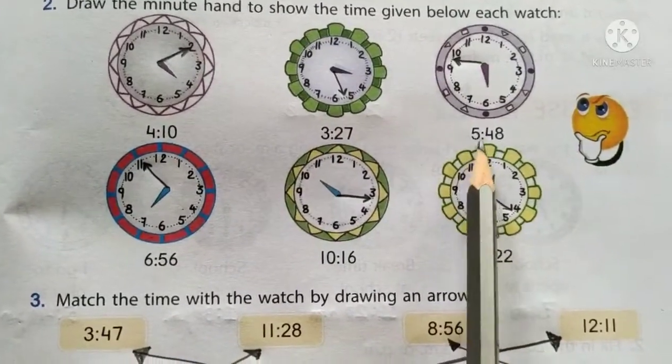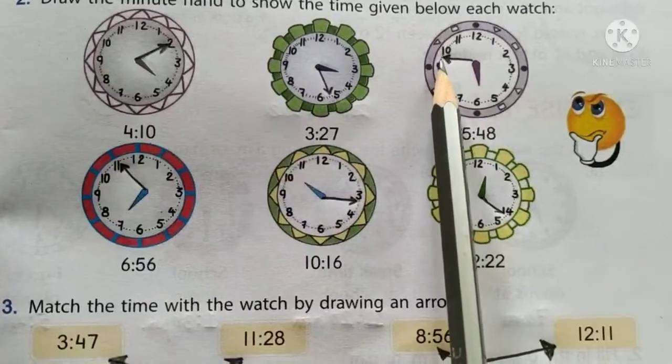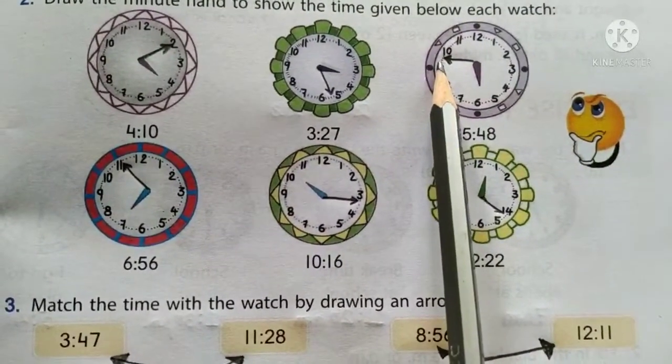Similarly, if it has 5, 48, then the minute hand will be at the third dot after 9. Because 9 is 45, so 46, 47, 48.